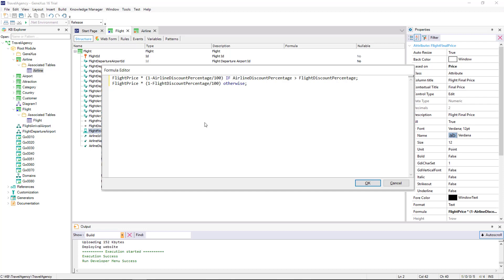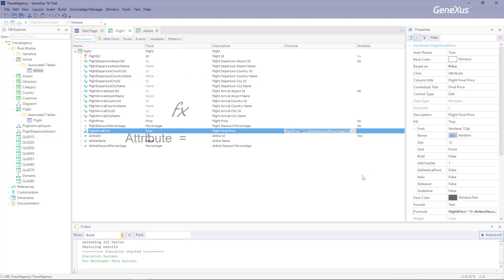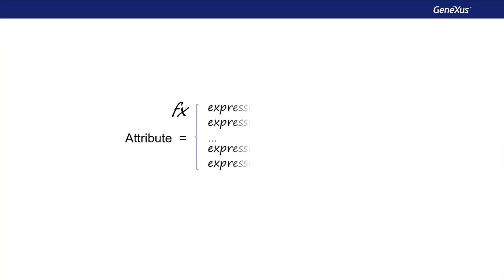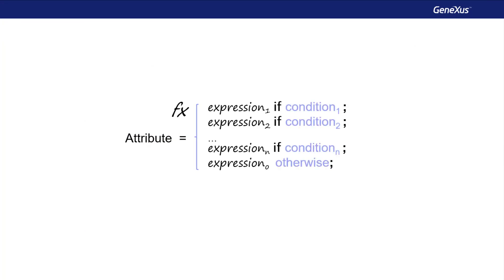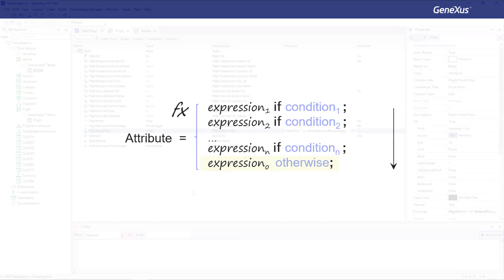Otherwise, the discount percentage of the flight itself is used to make the calculation. Note that formulas are written as expressions, so they end with a semicolon. To calculate the formula, GeneXus keeps the first expression that meets the condition. If no condition is met and an otherwise clause has been added, it uses this one.